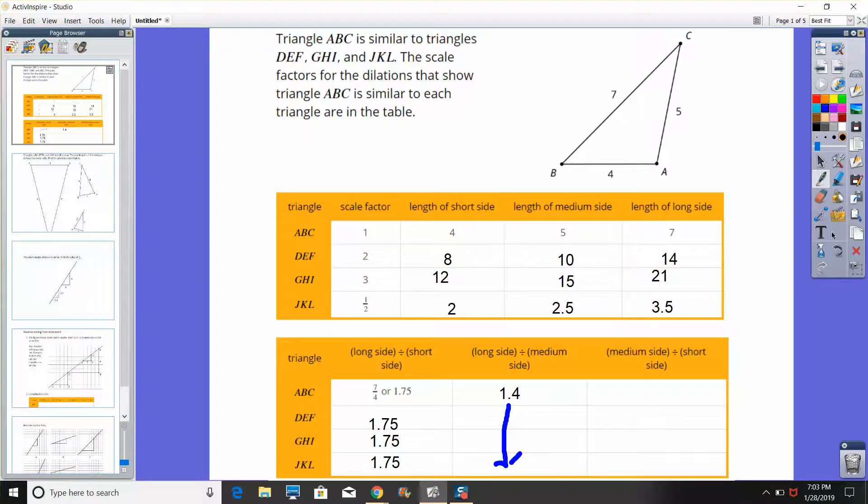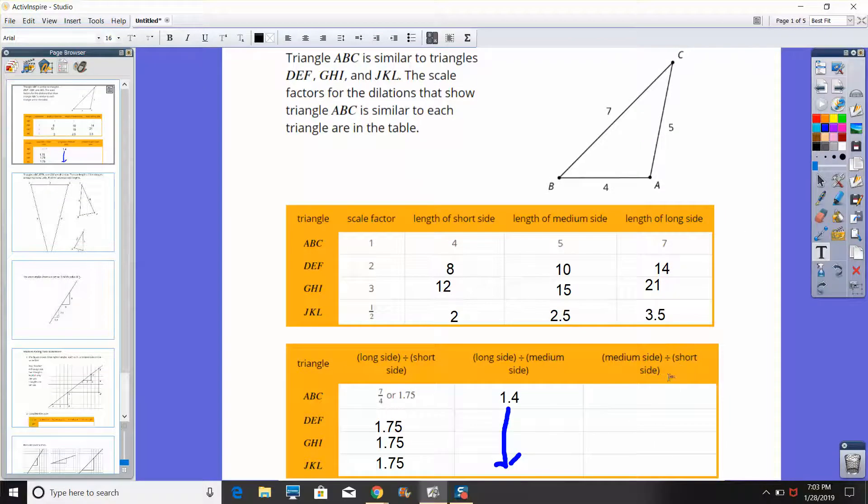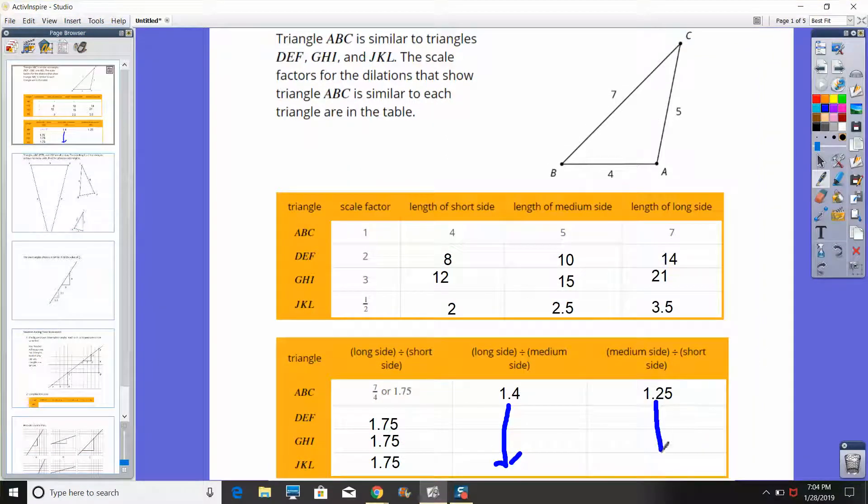Then if I do the medium side divided by the short side, 5 divided by 4, that's 1.25. Getting ahead of myself a little bit there, 1.25. And then we would, again, that would go all the way down.